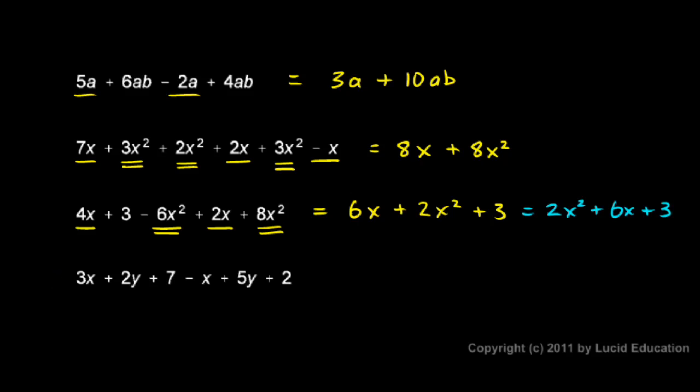And the last one. Here's a 3x and let's look down the list. There's a negative x. Okay, those are all the x terms. So let's combine those. 3x and a minus x gives me a 2x.